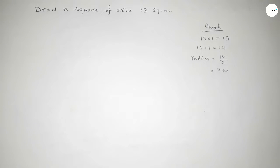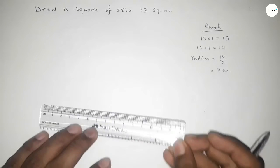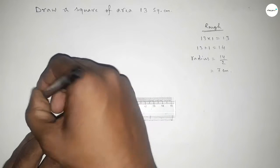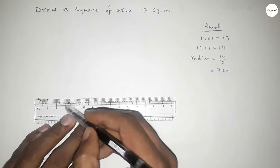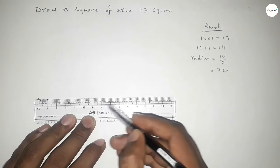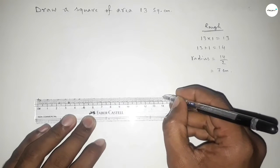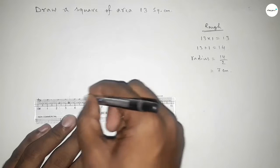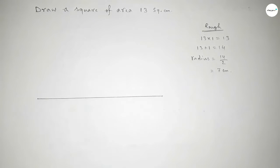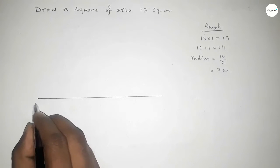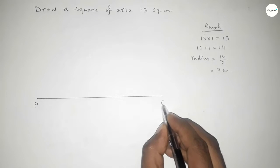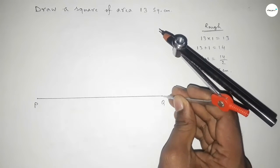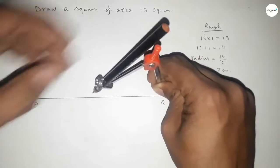First, we draw a length of 14 centimeters. Label the endpoints P and Q, so PQ = 14 centimeters.